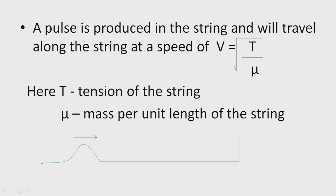Here we can see the bump. T is the tension of the string and μ is the mass per unit length of the string — in short, we can say m divided by l.